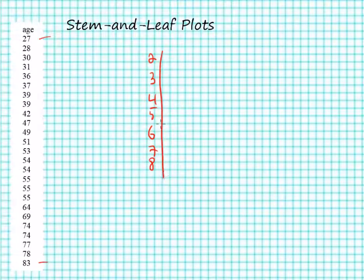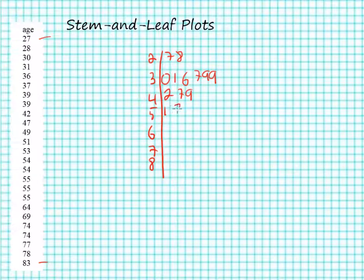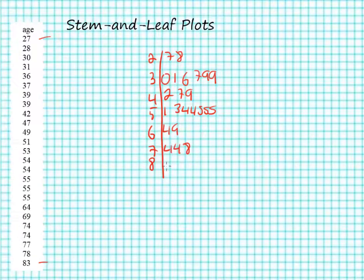That's my stem, and now my leaves are all going to be all the people who are in their 20s. So there's a 27-year-old and a 28-year-old. Under 30, I have a 30-year-old, 31, 36, 37, two 39-year-olds. And there's my 50-year-olds. And there's my distribution—nice little stem-and-leaf plot. Quick look at the distribution of ages. And just to draw a line over that, we can kind of see what that distribution looks like. There you go. That's it on stem-and-leaf plots.